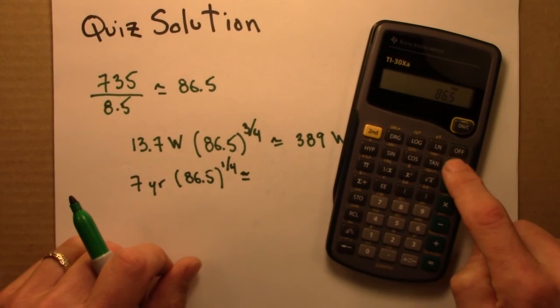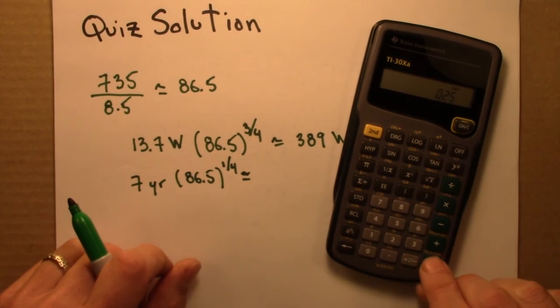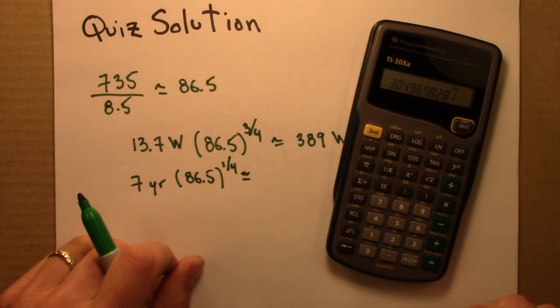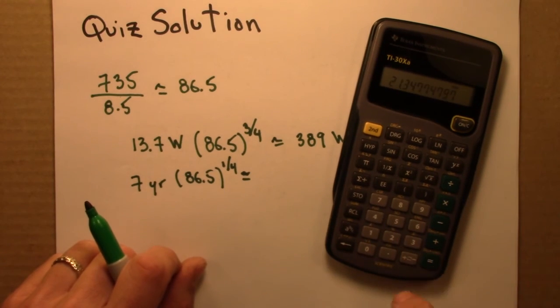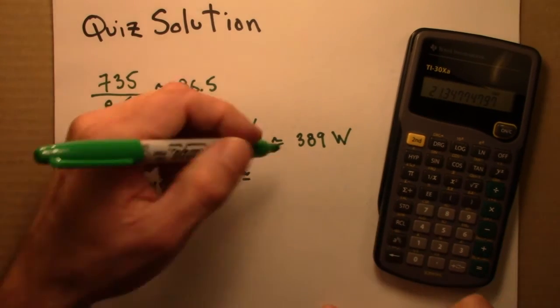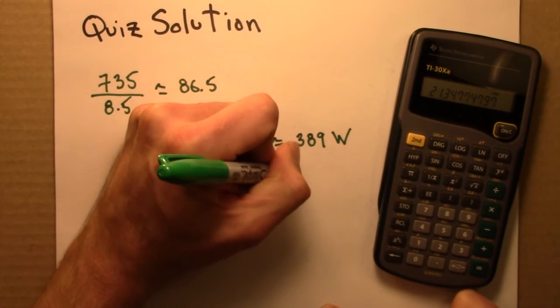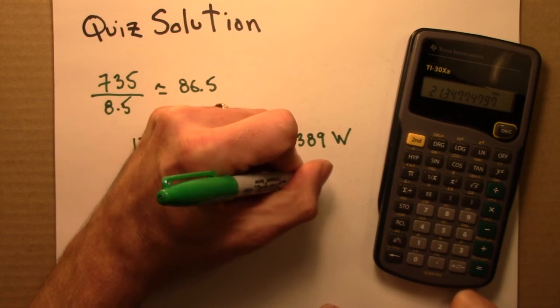86.5, now I raise it to the 0.25 power, and I get about 3.05. Multiply that by 7 years, I get about 21, so roughly 21 years.